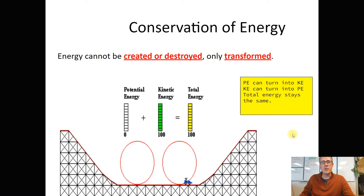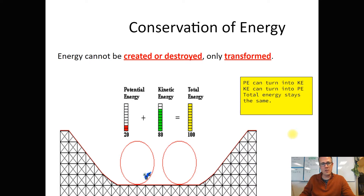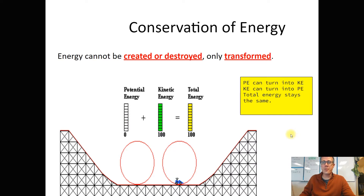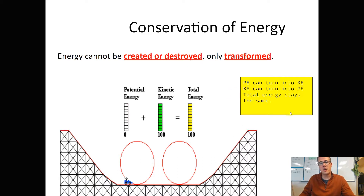The Law of Conservation of Energy says that energy cannot be created or destroyed, only transformed. We've done the Law of Conservation of Matter before, and a few others as well, so hopefully it feels familiar. Basically, it says that potential energy can turn into kinetic energy, and kinetic energy can turn into potential, but the total energy always stays the same.